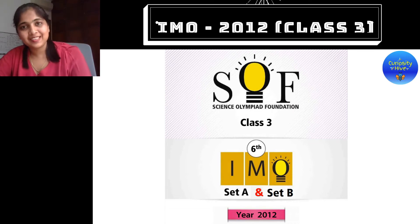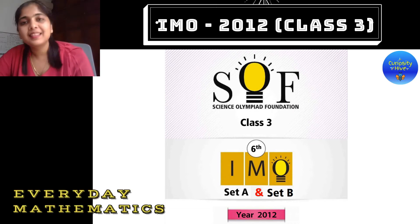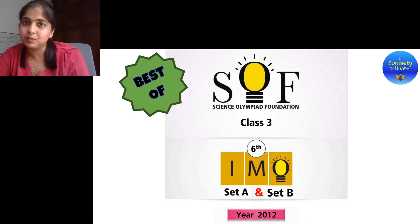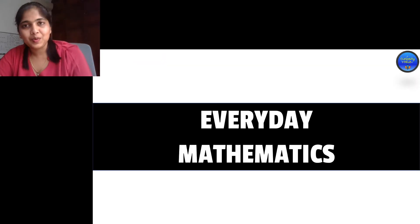Hello and welcome back to Curiosity Hive where we are looking at the IMO class 3 paper. We have the best of 2012 IMO paper from set A and set B. We have already solved the logical and mathematical reasoning sections in the earlier videos. The video link is given in the video description box below. In this video we are going to solve the everyday mathematics section. There are some really interesting questions here. So get ready with your pens and papers and try to solve each and every question. With every question there is something new to learn. So stick with me till the very end of the video.